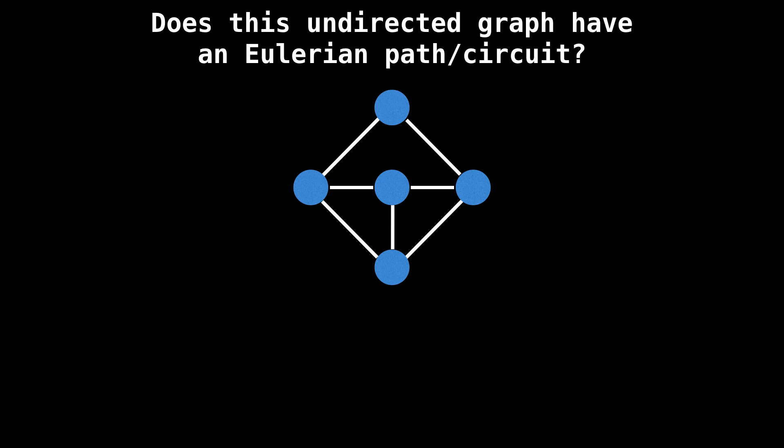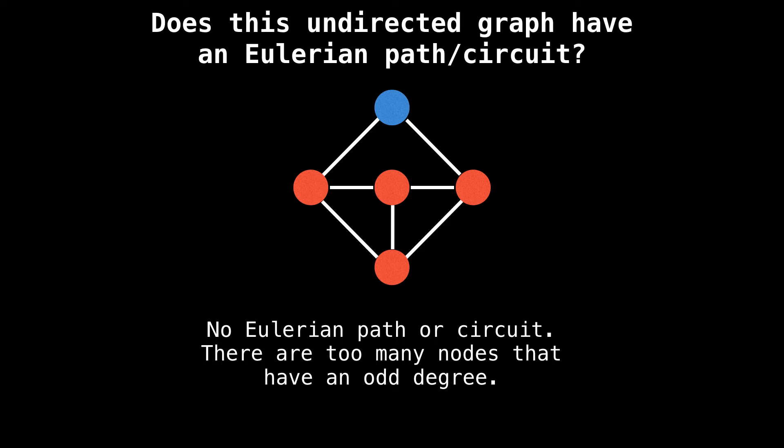So it's now quiz time, and I'm going to make sure you've been paying attention. I'm going to present to you various graphs, and you need to determine whether the following graph has an Eulerian path and Eulerian circuit, or both. So we'll start with undirected graphs and then later move on to directed graphs. Please feel free to pause the video to think things over. So this graph has no Eulerian path or circuit. You can tell because there are too many nodes with an odd degree.